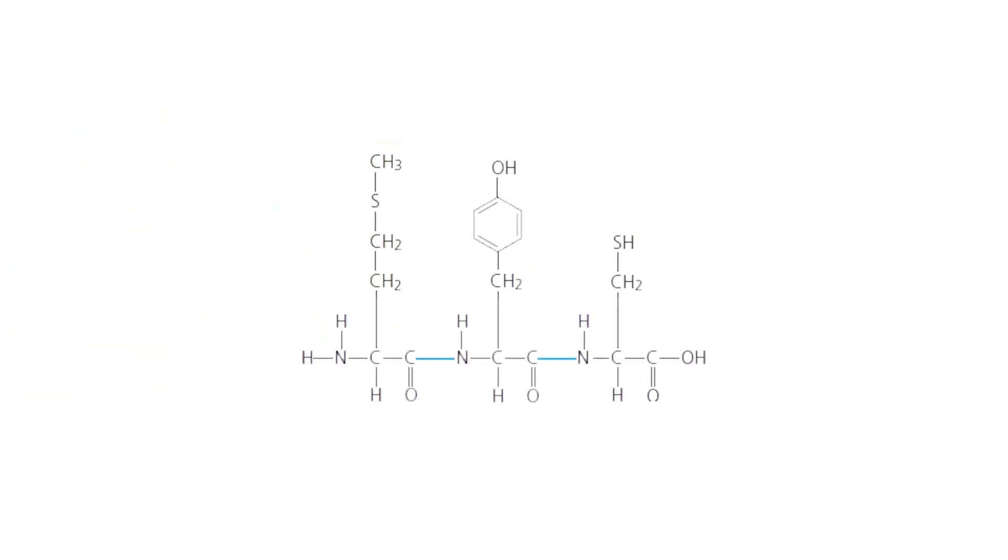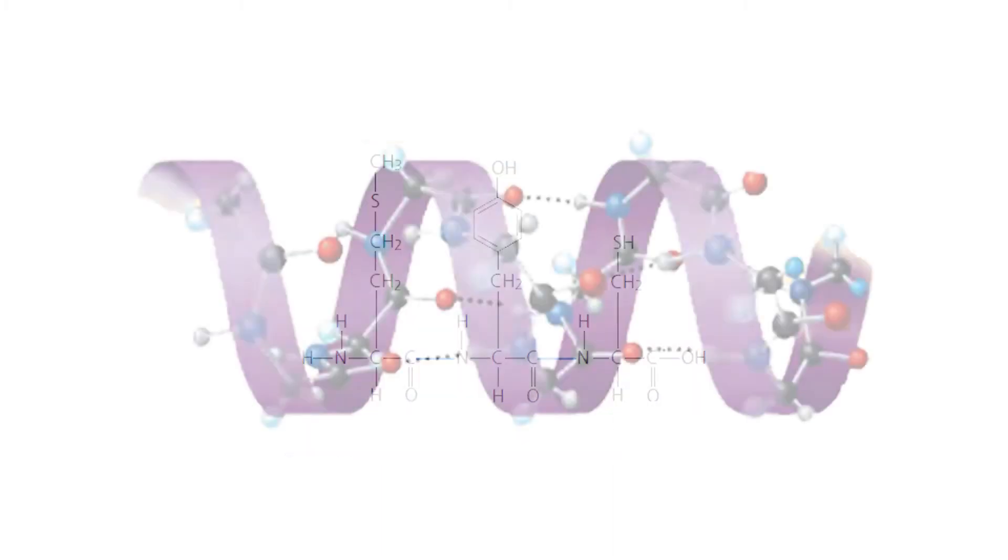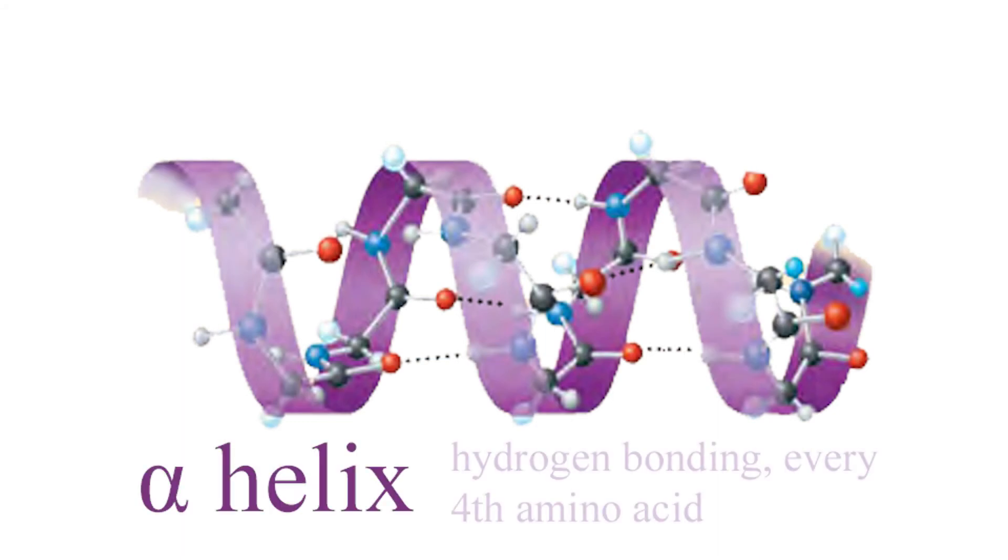Secondary structure describes how polypeptide chains form helices due to interactions between the backbone of the polypeptide. For instance, an alpha helix is formed when hydrogen bonding occurs between every fourth amino acid.